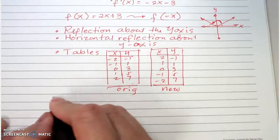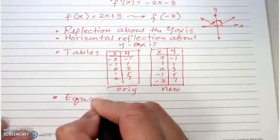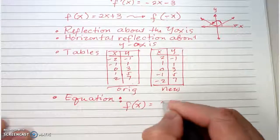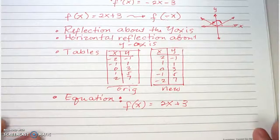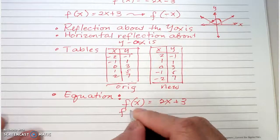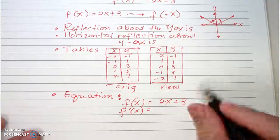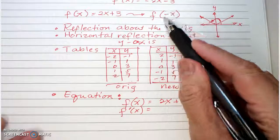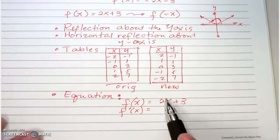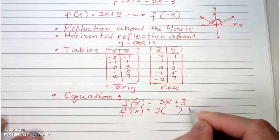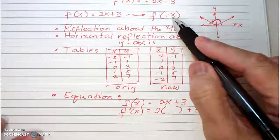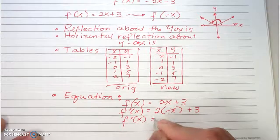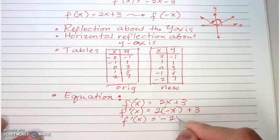Now for the equation: f(x) = 2x + 3, and for f'(x) we replace x with negative x. Plugging that in, the transformed function becomes f'(x) = 2(-x) + 3, which simplifies to f'(x) = -2x + 3.